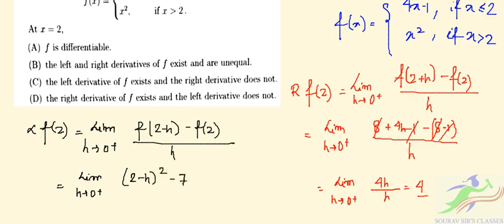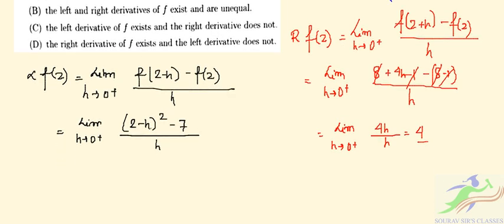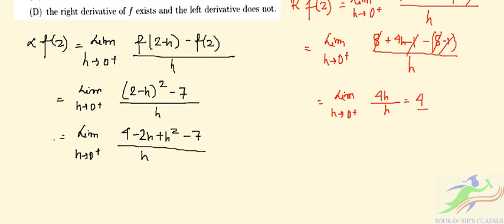Putting the values, as h tends to 0 plus, it will be (2-h) squared, and f(2) is 4 into 2 minus 7. So limit h tends to 0 plus, (2-h) squared expands to 4 minus 2h plus h squared minus 7, all by h, which simplifies to h squared minus 2h minus 3 by h.